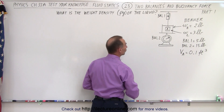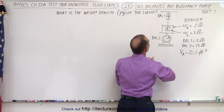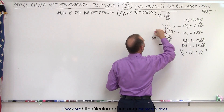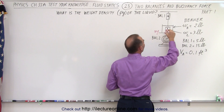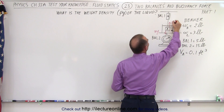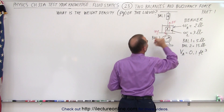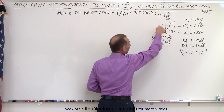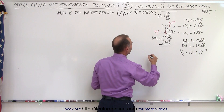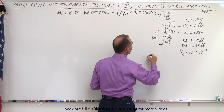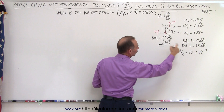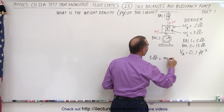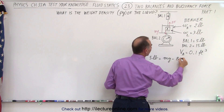Let's identify all the forces. We have the weight of block A (mg of block A) pulling down, and we have the buoyancy force of block A pushing up. Using those two forces — which are the two forces applicable to balance one — we can say that the weight measured by balance one, which is five pounds, is equal to mg minus the buoyancy force.